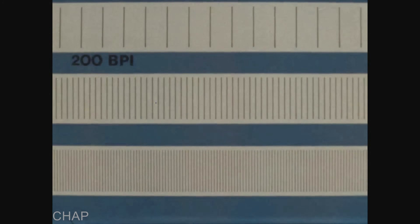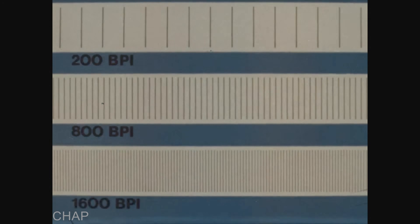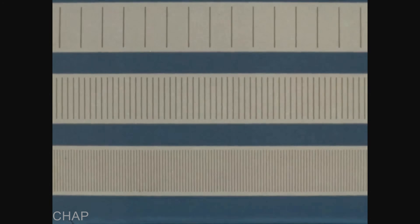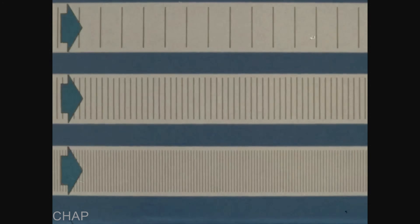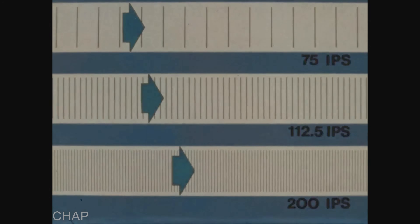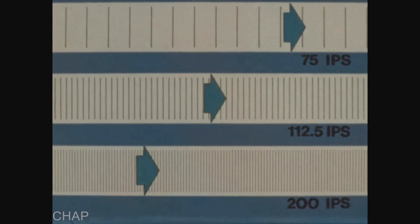Across three generations of IBM tape technology, recording density has increased eightfold to its current standard of 1600 BPI. Increased bit densities were paralleled by faster tape transport speeds.